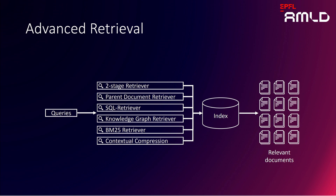Now you have all those different queries and transformed queries, along with your vector database containing all stored documents and information. You can then use different kinds of retrievers to go into that vector database and retrieve the most relevant information. Each retriever has a very specific task: some are for querying tabular data in SQL databases, others access and search a knowledge graph stored in your vector database, and others use classical approaches like BM25 to retrieve the most relevant documents.